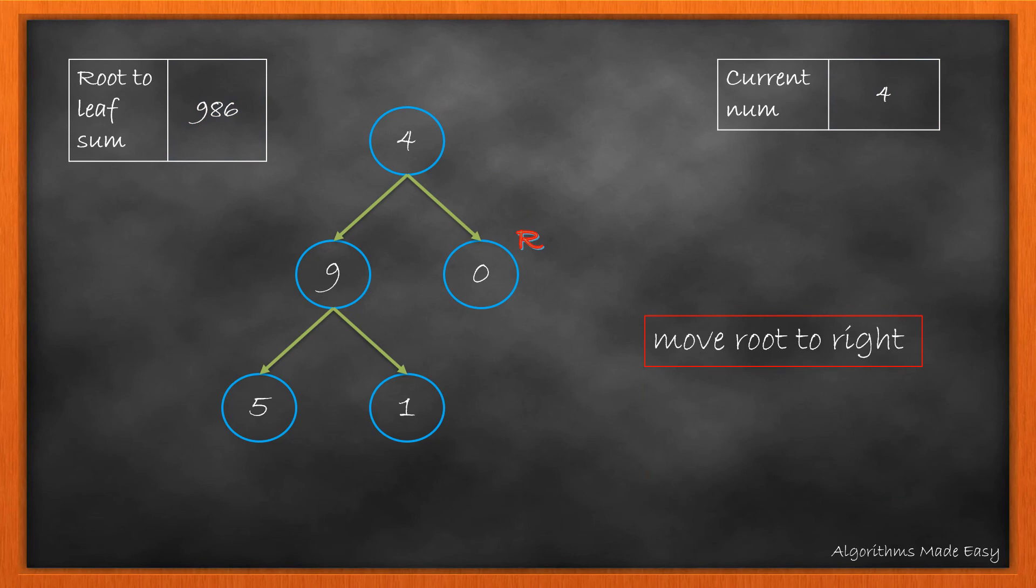As its left is null, we update current number. As right is also null, we add current number to root to leaf sum and update root to its right. As now the root becomes null, we return result.